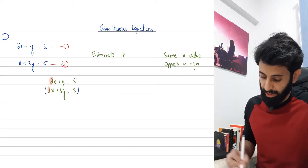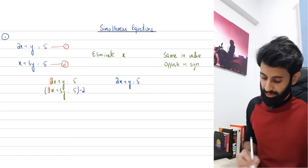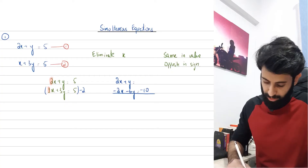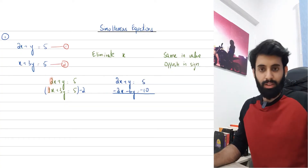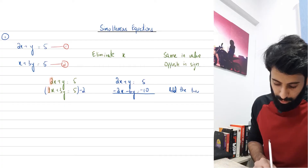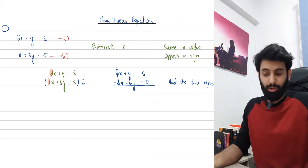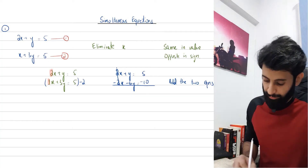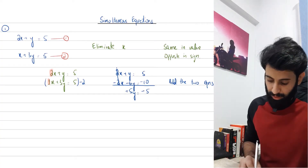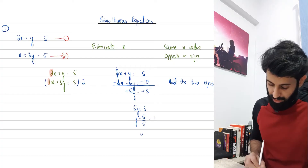I'm multiplying the second equation by minus 2. The first equation stays as it is. The second equation becomes minus 2x minus 6y equals minus 10. Make sure x is aligned with x, y with y, and the constant with the constant. When I add the two equations, 2x plus minus 2x gets eliminated — exactly what we wanted. Y plus minus 6y is minus 5y, and 5 plus minus 10 is minus 5. The two negatives cancel, giving 5y equals 5, which means y equals 1.